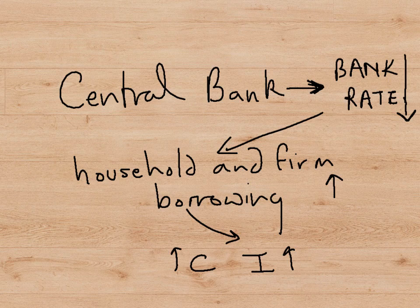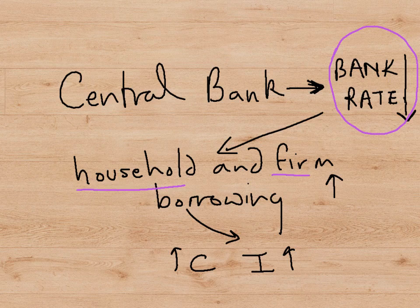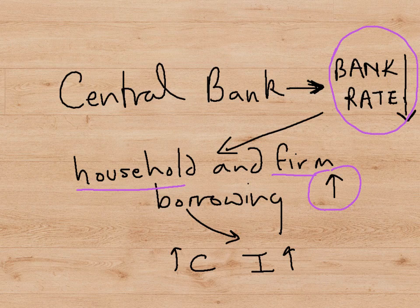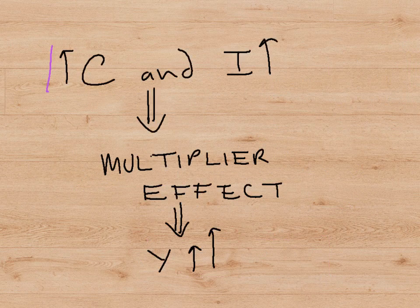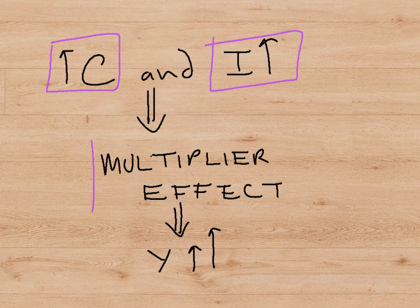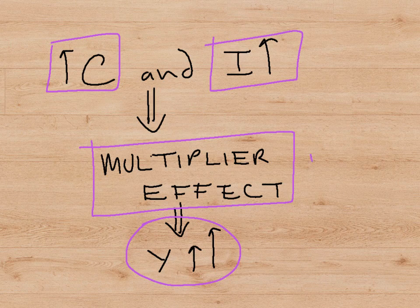So, what they will do is reduce the bank rate — that is, the interest rate which they charge to commercial banks when they want to borrow money from the central bank. When the bank rate is reduced, households and firms will find it cheaper to borrow money if the commercial banks reduce their lending rates in line with what the central bank has done. This relies on the commercial banks following the lead of the central bank, so that when the central bank reduces its bank rate, the commercial banks would also reduce their lending rates. If they do that, households and firms will find borrowing is cheaper, and therefore they will borrow more. Therefore, consumer spending and investment spending will both increase. As consumer spending and investment spending increase, both will have a multiplier effect on output, and the output will rise quite fast as a result of the multiplier effect.